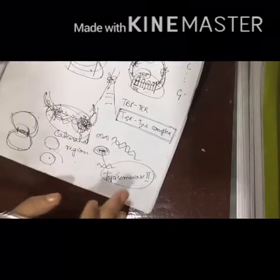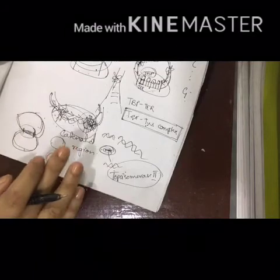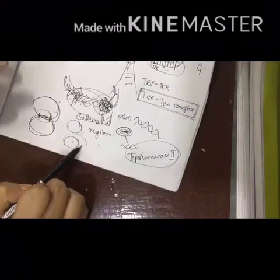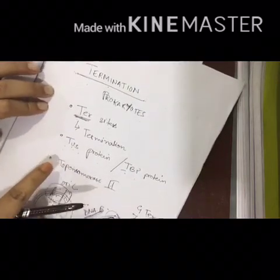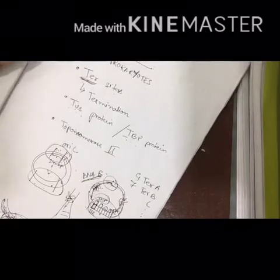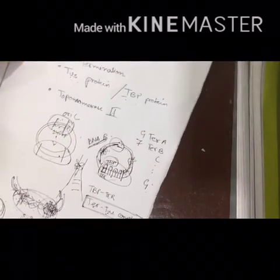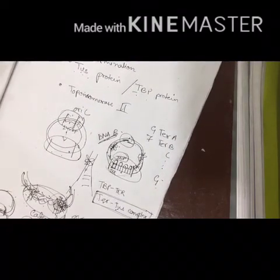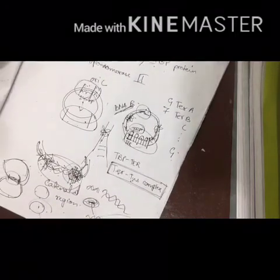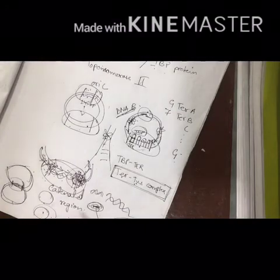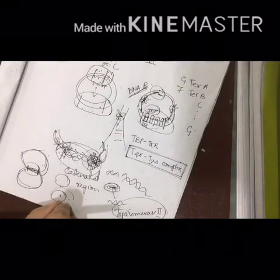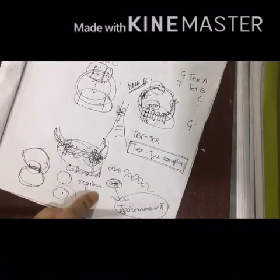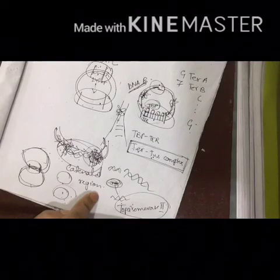So this was the termination process. We have completed all three processes — initiation, elongation, and termination of replication — to finally get the replicated DNA. The three important things here are the ter site, the tus protein, and topoisomerase II. Next up is transcription, and then translation. If you want me to cover something else, let me know in the comments. Please like and subscribe, and let me know what I can improve. Thank you and bye!